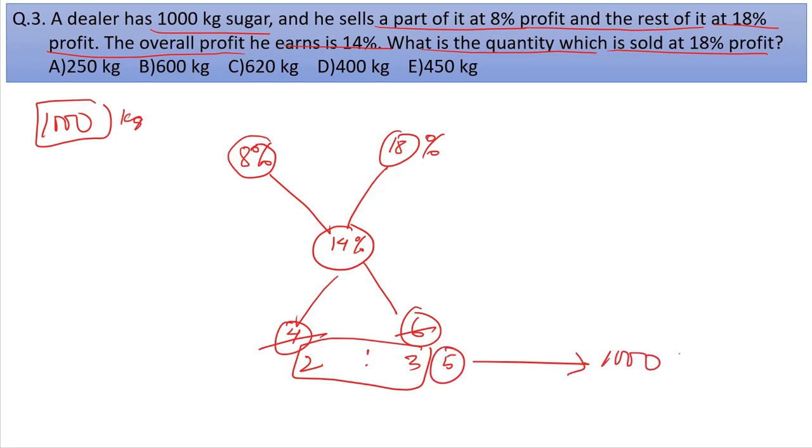Total quantity is 5 parts, and we have 1,000 kg. So each part is 200 kg. The quantity sold at 18% profit is 2 parts, which is 2 times 200 equals 600 kg. The answer is option B.